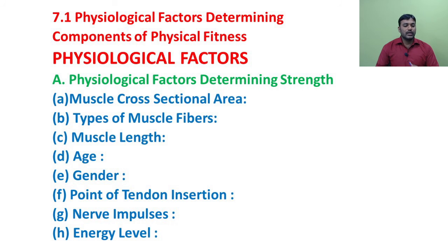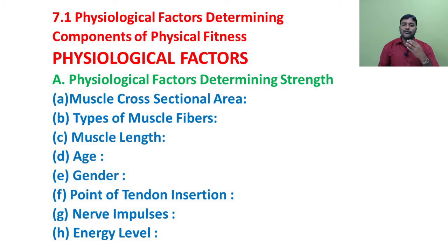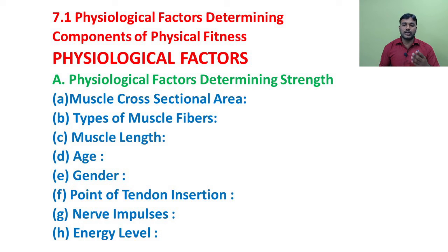First, physiological factors determining strength. Muscle strength is defined as the greatest amount of force that muscles can produce in a single maximal effort. This depends on the following physiological factors: muscle cross-sectional area, types of muscle fibers, muscle length, age, gender, point of tendon insertion, nerve impulses, and energy level.